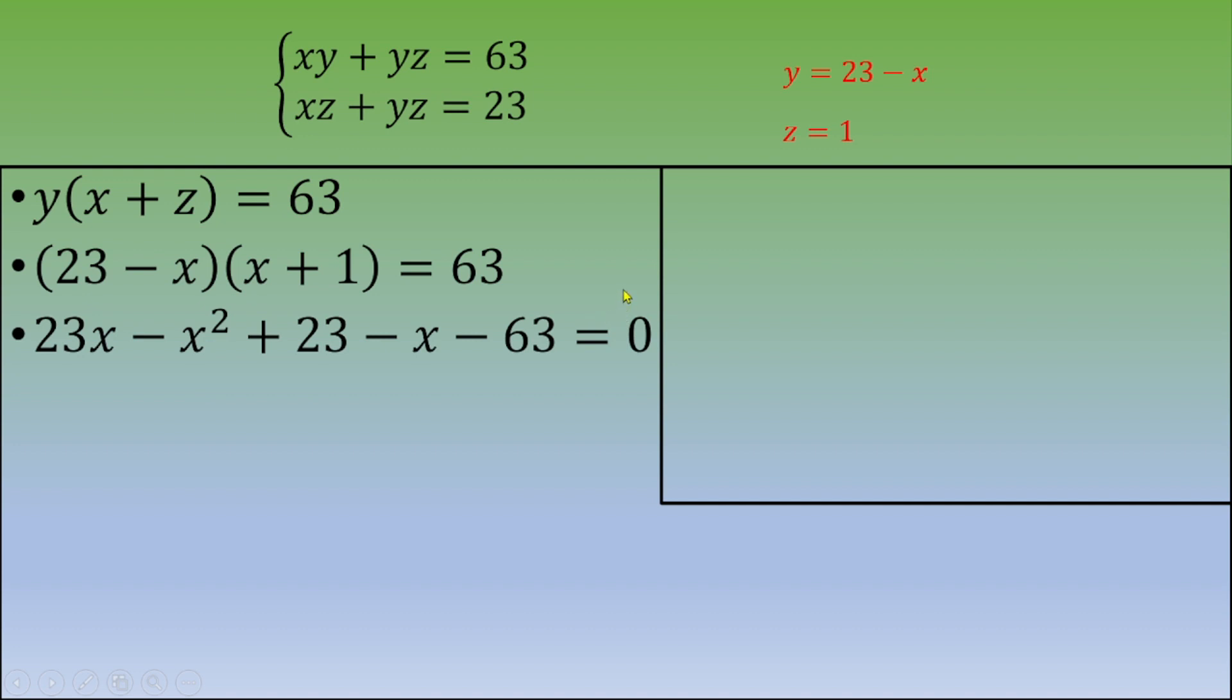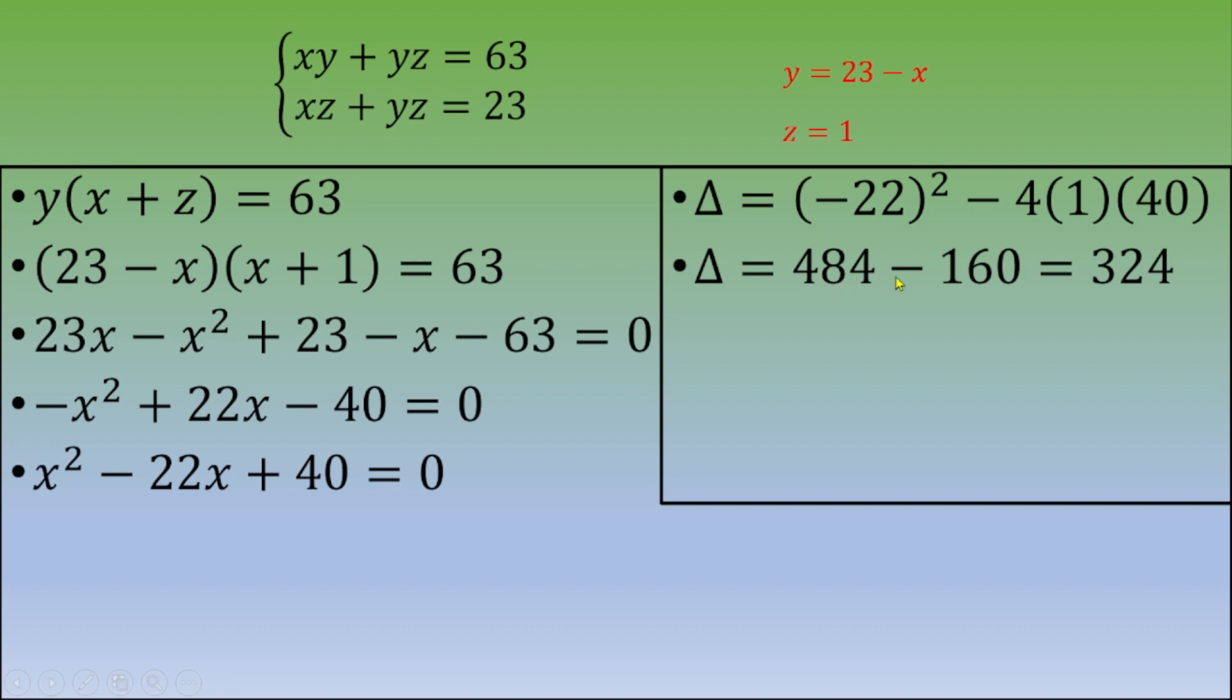So we are going to do the math. And we end up with negative x squared plus 22x minus 40 equals zero. So now we're going to multiply by negative one on both sides. And we end up with x squared minus 22x plus 40 equals zero. So this is a quadratic equation. We are going to calculate the discriminant to calculate then these two roots. So the discriminant. This is negative 22 squared minus 4 times 1 times 40. And this is 484 minus 160. And this is 324. And this number is 18 squared.